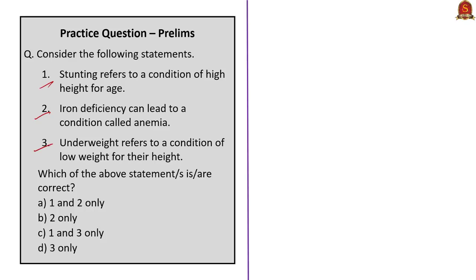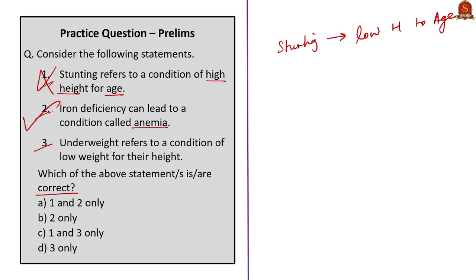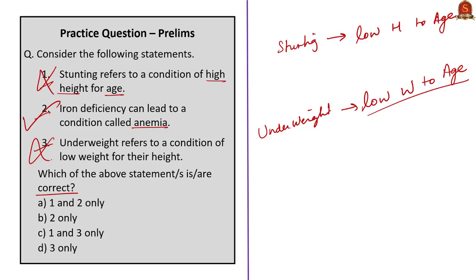In the next question, three statements are given. The first statement says stunting refers to a condition of high height for age — this is wrong. Stunting refers to the condition where children have low height for their age. The second statement says iron deficiency can lead to a condition called anemia — this is correct. The third statement says underweight refers to a condition of low weight for their height — this is also wrong. Underweight refers to low weight for their age, not height. It is child wasting that refers to low weight for height. The question asks for the correct statement, and statement 2 is the only correct one. The correct answer is option B.